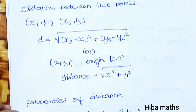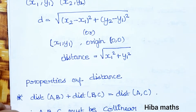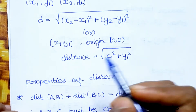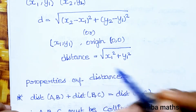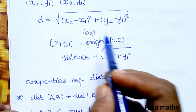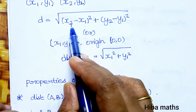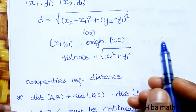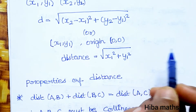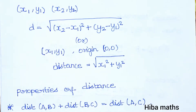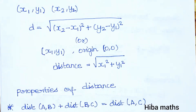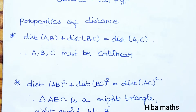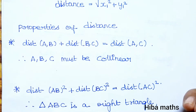The distance between one point and the origin is equal to root of x1 squared plus y1 squared. That is the property of the distance formula. Now, how do we find whether points are collinear or not?